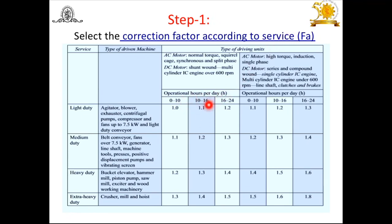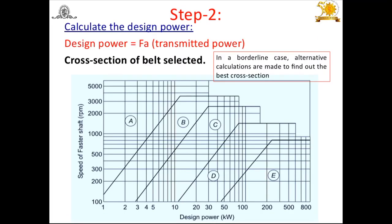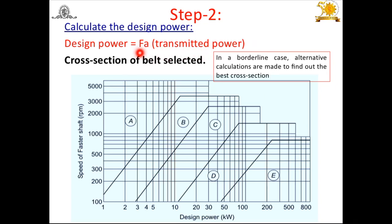In the next step, we find the design power. Design power is required to select the belt cross-section. As per the Bureau of Indian Standards, different cross-section belts are available: A, B, C, D, E, and Z (though Z is generally not preferred). Using the correction factor FA based on service condition and multiplying it by the actual transmitted power gives the design power.